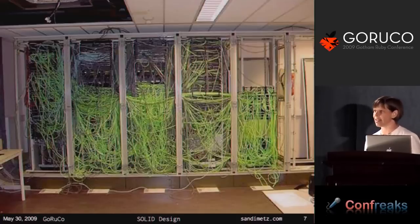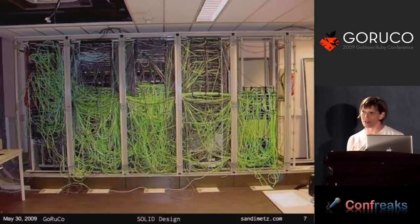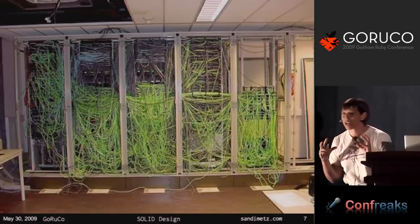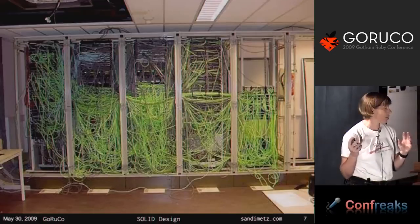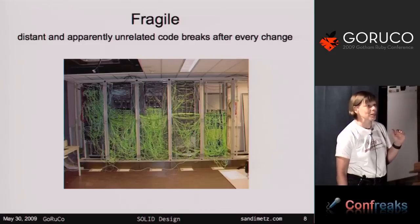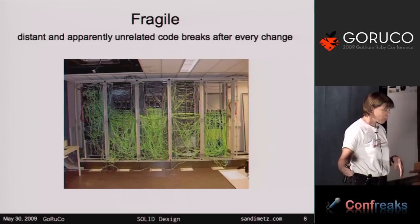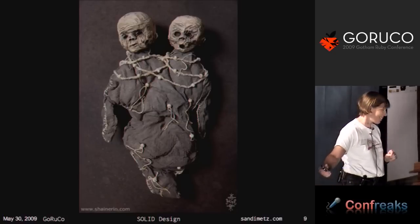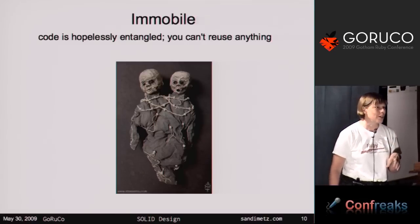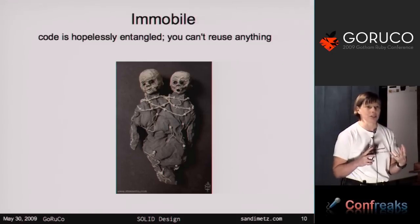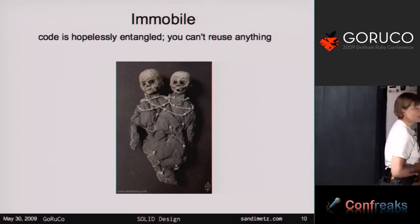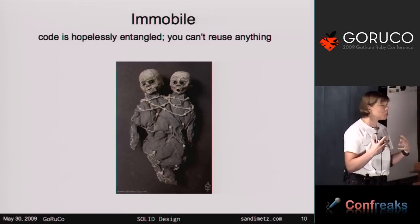Or your app might be fragile. Fragility is a lot like rigidity, but the difference is fragile apps are rigid and you can't tell by looking. If you move a wire, you can't predict what happens. This application is both rigid and fragile. Or your application might be immobile — that quality where you'd like to reuse some code somewhere else, but you can't extricate it. So you end up copying a section of code and putting it somewhere else. You don't actually have reuse; you have reuse through duplication.